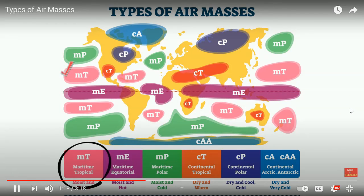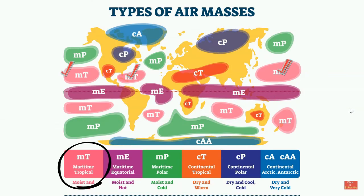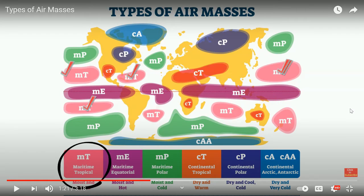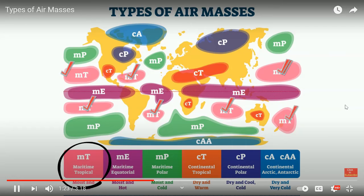A maritime tropical air mass will be warm and moist. Tropical means warm — think of Puerto Rico, Cuba, Mexico, warm areas around there. Moist because of the humidity and moisture content in the air. On this diagram, maritime tropical air masses are pink in color.